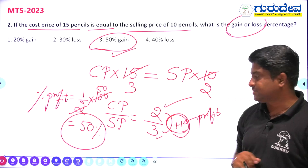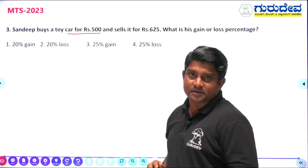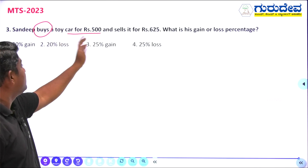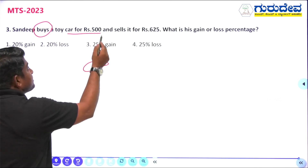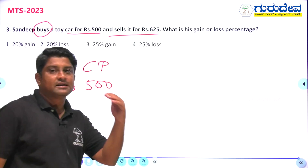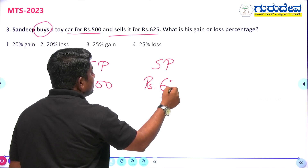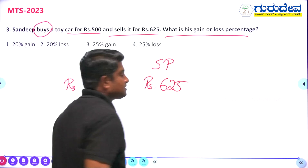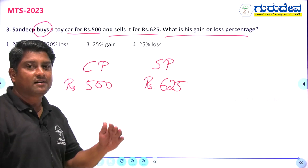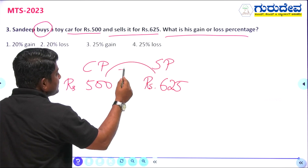Third question: Sandeep buys a toy car for 500 rupees — buying means cost price, so cost price is 500 rupees. He sells it for 625 rupees — that is the selling price. What is the gain or loss percentage? I am purchasing for 500 and selling for 625, so obviously I am getting a profit. The profit is 625 − 500 = 125 rupees.